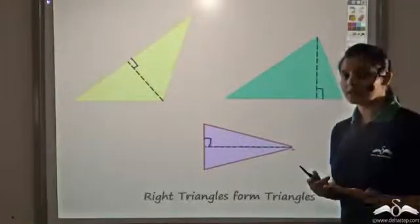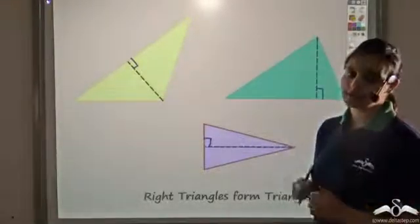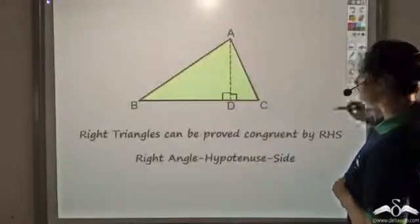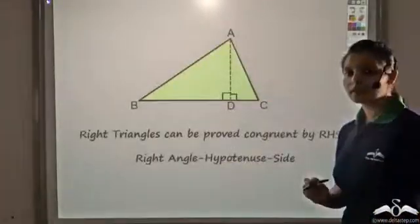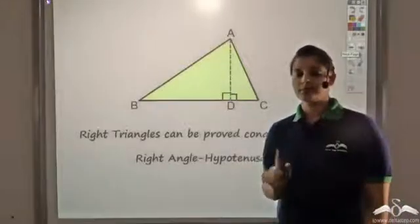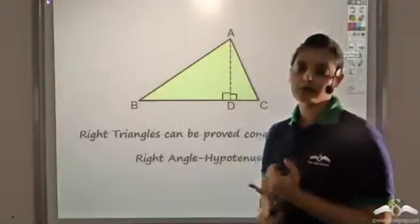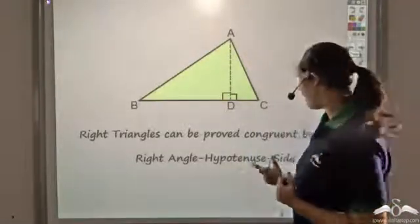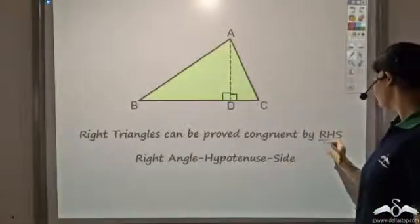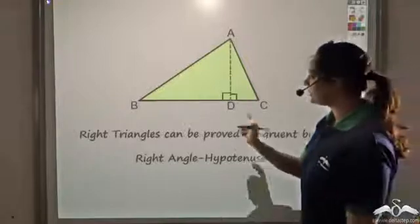So a better question would be: when can I say that these two right triangles would be congruent? We know that in right triangles we can prove congruency by Right Angle Hypotenuse Side, that is RHS.